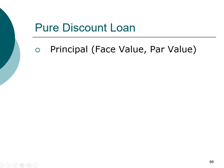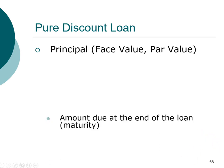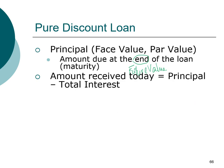In a pure discount loan, the term we use is principal, face value, or par value. This is very important because the interest is computed based on the principal. However, the principal is the amount that you actually have to pay back at the end of the loan, at the time of maturity. Since the principal is paid at the end of the loan, this is your future value.